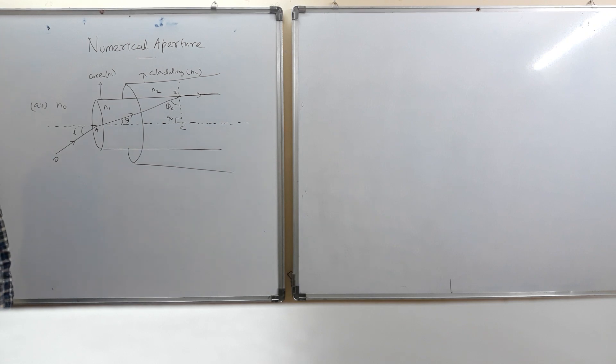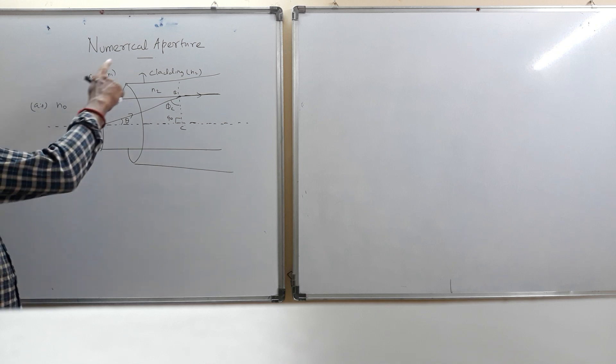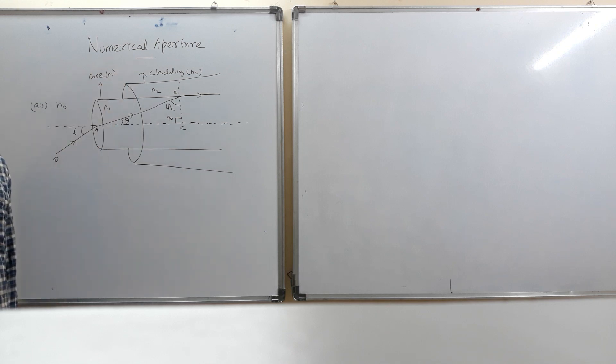Hi students, in last class we have discussed about the structure of optical fiber and how the light is transmitted in the form of total internal reflection. Today we are going to discuss about the numerical aperture and acceptance angle of the optical fiber.